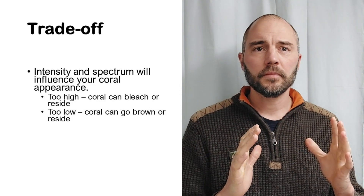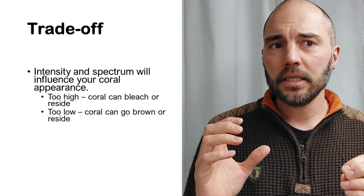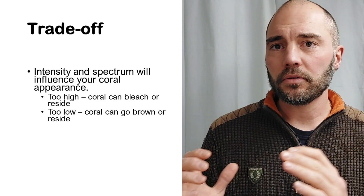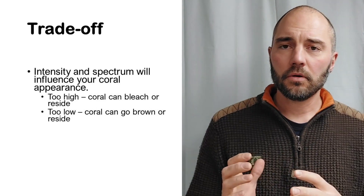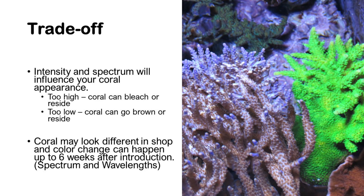Here is a trade-off. The intensity and the spectrum will influence your coral appearance. If you have too high intensity you can bleach the coral and even get the coral to start receding. And if it's too low, the coral can go brown and can also start receding. Furthermore, what may happen is the coral looks different in the shop where you're buying it, and the color can even change up to six weeks after introduction in your tank, due to a possibly different spectrum, different wavelength, and different intensities.